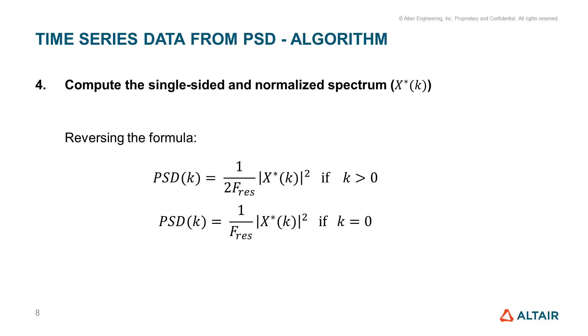In order to build our time series data, we also need information regarding the phase. But this information is lost in the power spectral density. So how can we retrieve that?